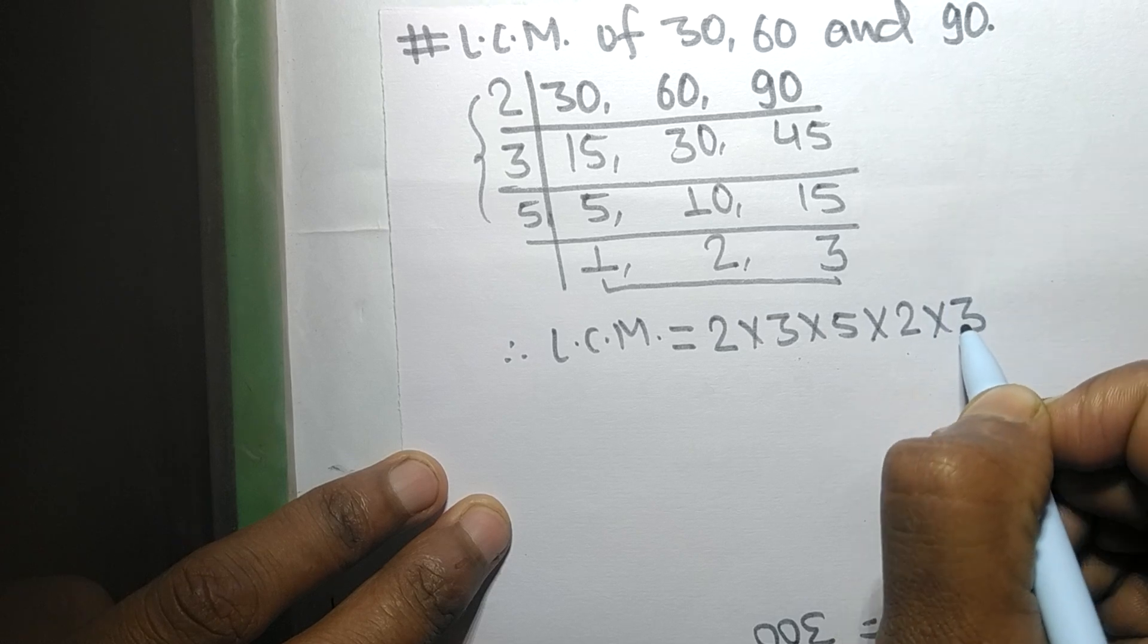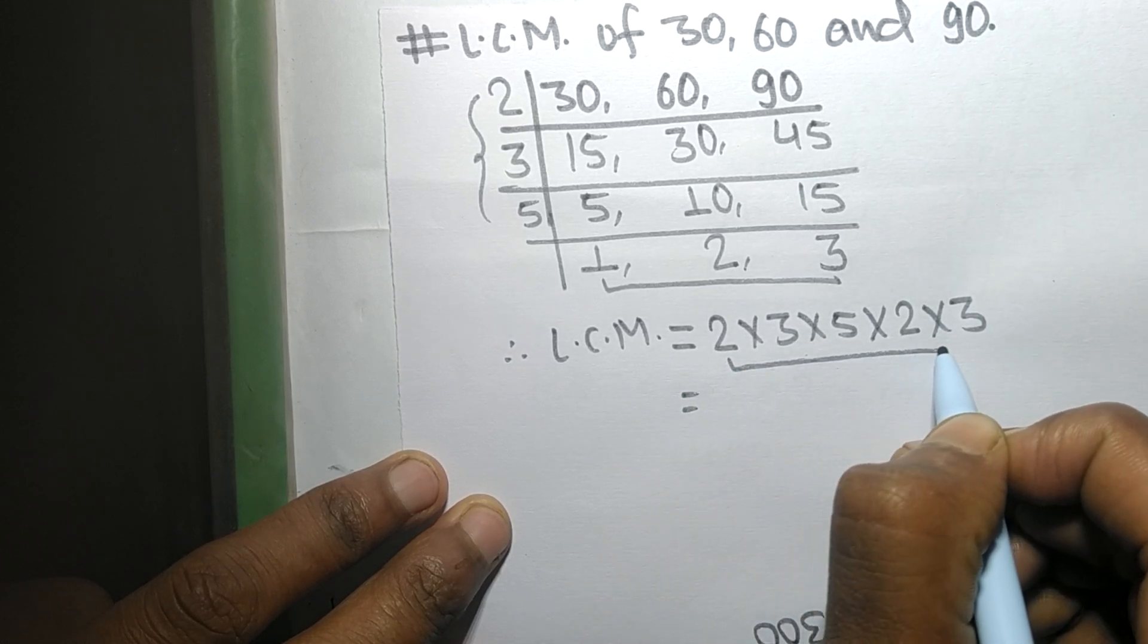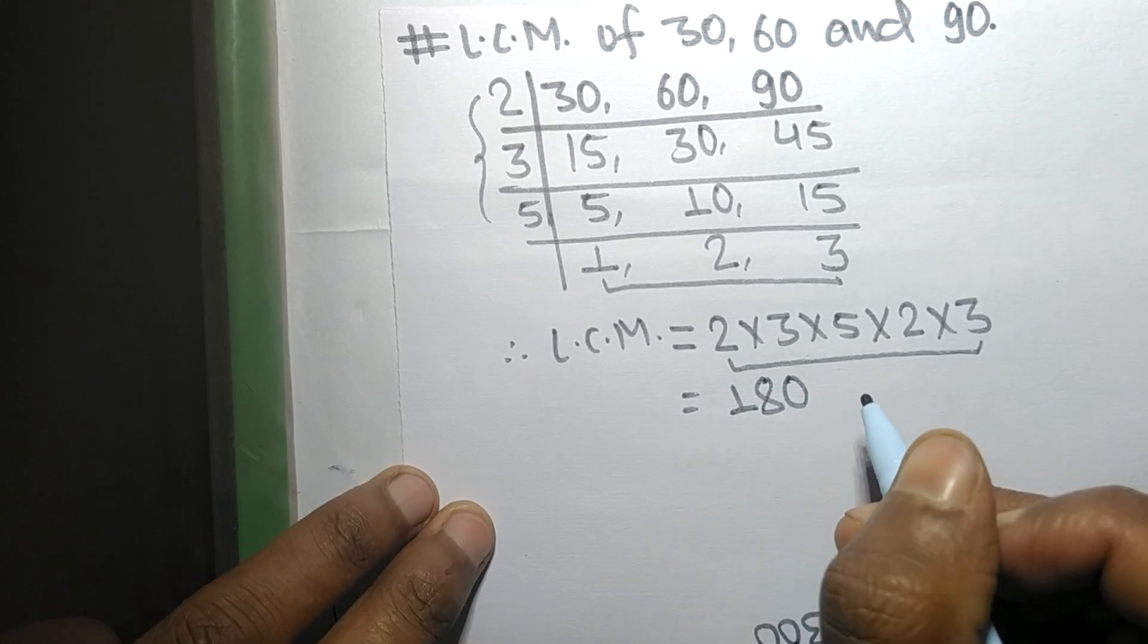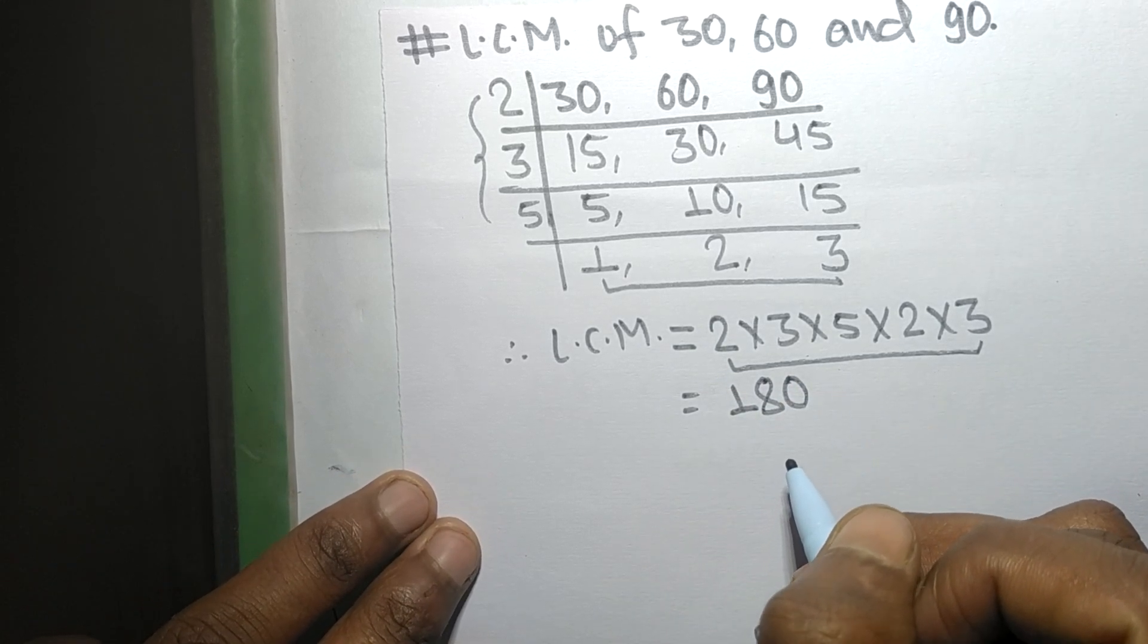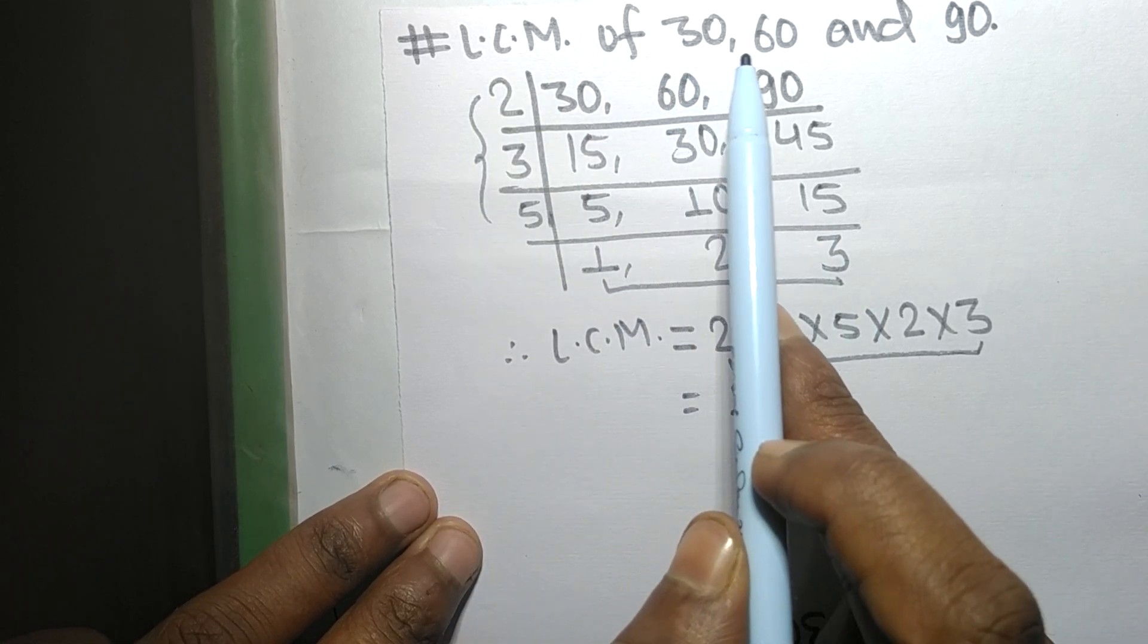2 and 3. So by multiplying all these numbers we get 180. So 180 is the LCM of 30, 60,